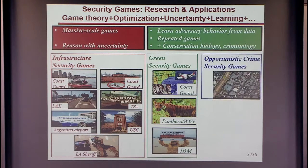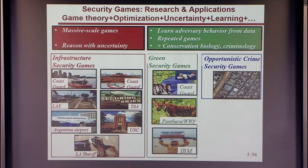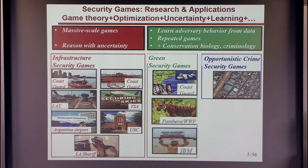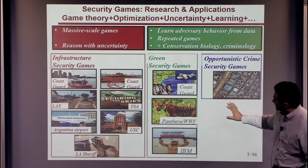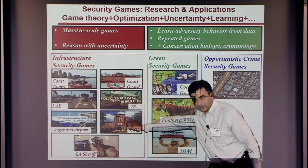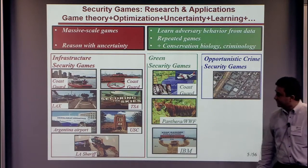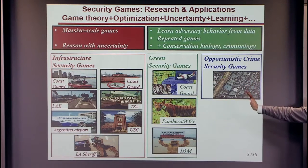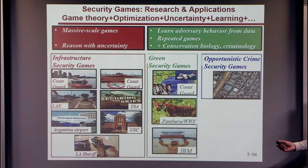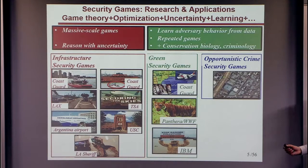There is even more data available from opportunistic crime. We have data from in and around USC — unfortunately we are in a part of LA with a lot of crime — giving us several years of spatial data to learn adversary models. This leads to very different research challenges, including exploration versus exploitation.